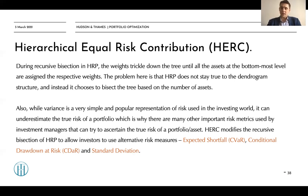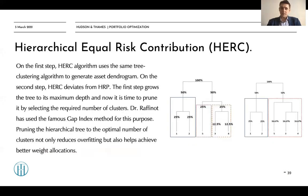Let's take a look at the HERC algorithm in detail. On the first step, HERC uses the same hierarchical clustering algorithm to generate an asset dendrogram. On the second step, HERC deviates from HRP: the first step grows the tree to its maximum depth, and now it's time to prune it by selecting the required number of clusters. The gap index method is used for this purpose. Pruning the hierarchical tree to the optimal number of clusters not only reduces overfitting but also helps achieve better weight allocations.